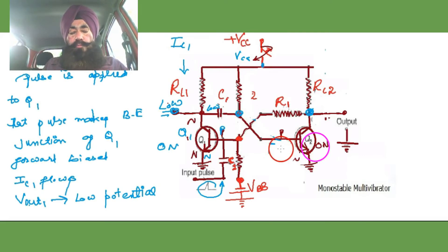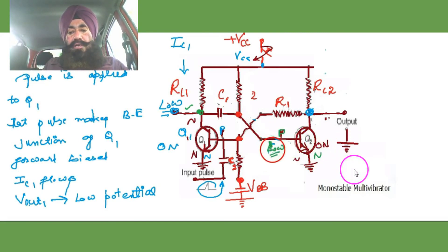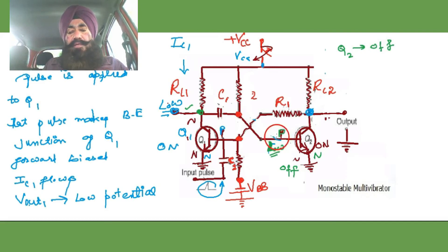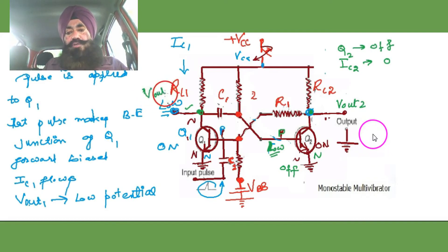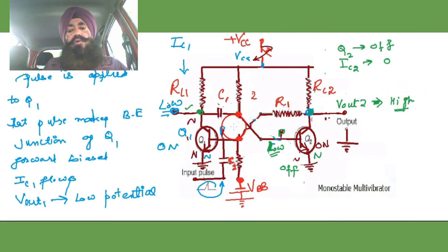Now we are looking at Q2 — what happens to Q2 at this stage. The base of Q2 also comes at the low potential, because the collector of Q1 is low. Therefore the base of Q2 also comes at the low potential. When the base — which is P — comes at low potential, it becomes reverse biased. Because of the reverse biasing, Q2 turns off. When Q2 is off, there is no IC2, and V-out-2 becomes high. So Q1 is on, V-out-1 is low; Q2 is off, V-out-2 is high. But this is not a permanent stage.